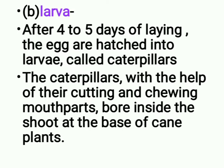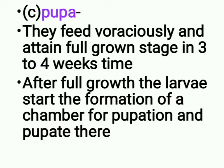The total number of eggs laid by a single moth is 300 to 400. Larvae: after four to five days of laying, the eggs are hatched into larvae called caterpillars. The caterpillars, with the help of their cutting and chewing type of mouthparts, bore inside the shoot at the base of cane plants.